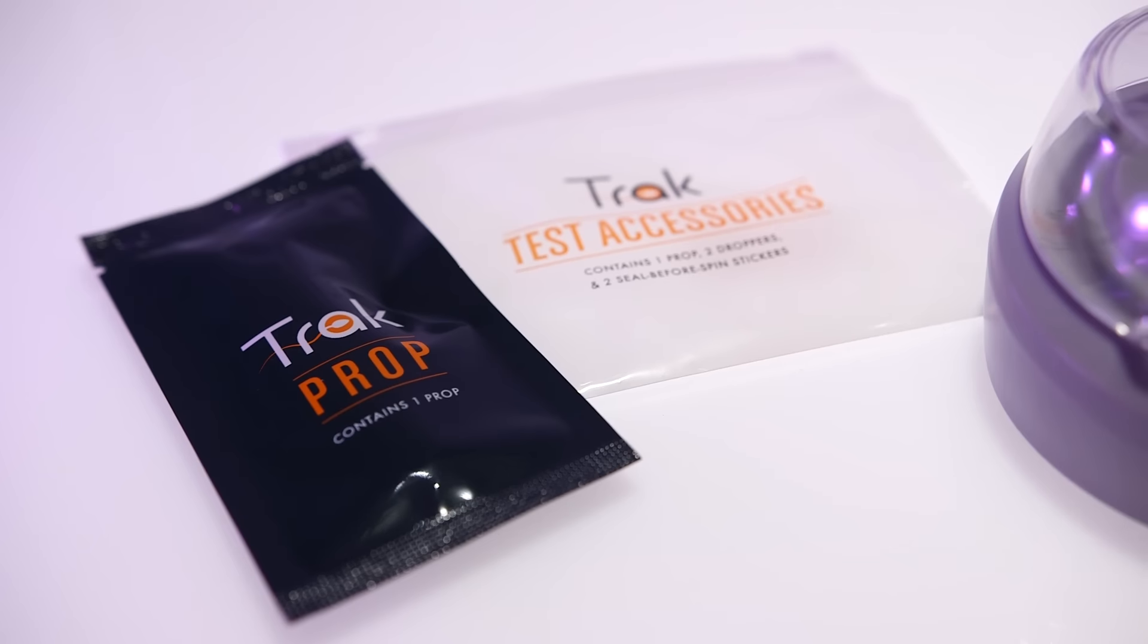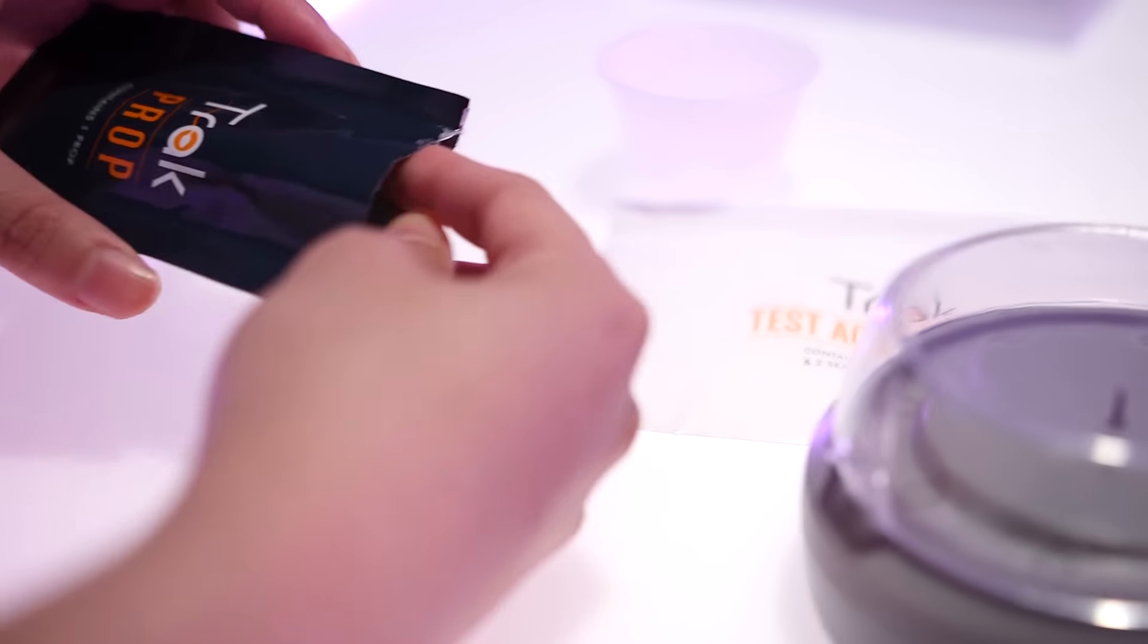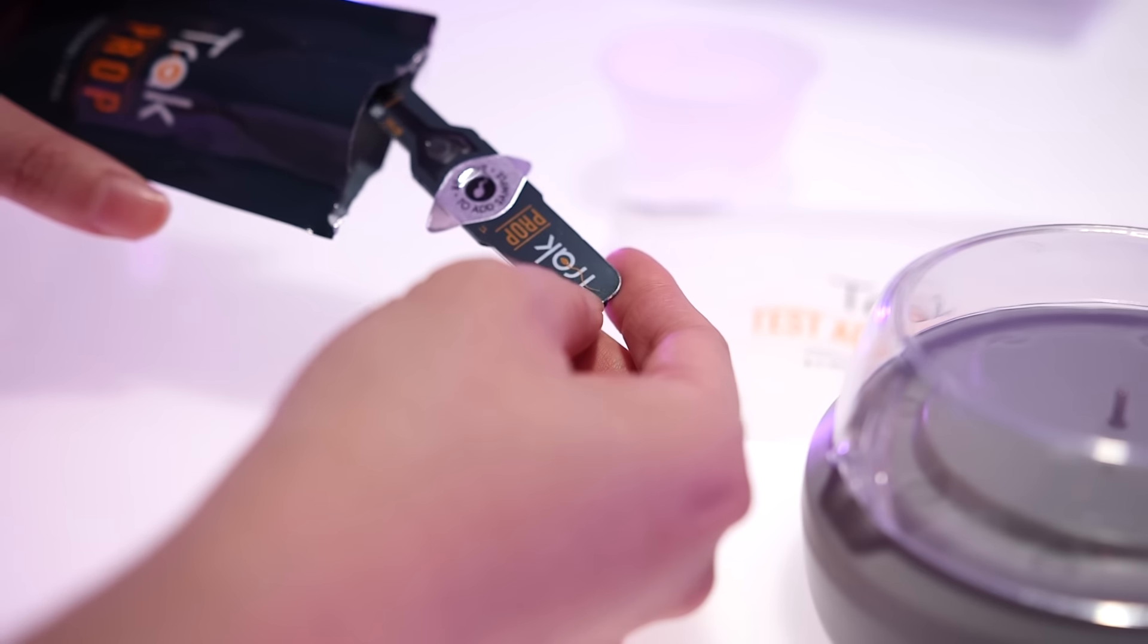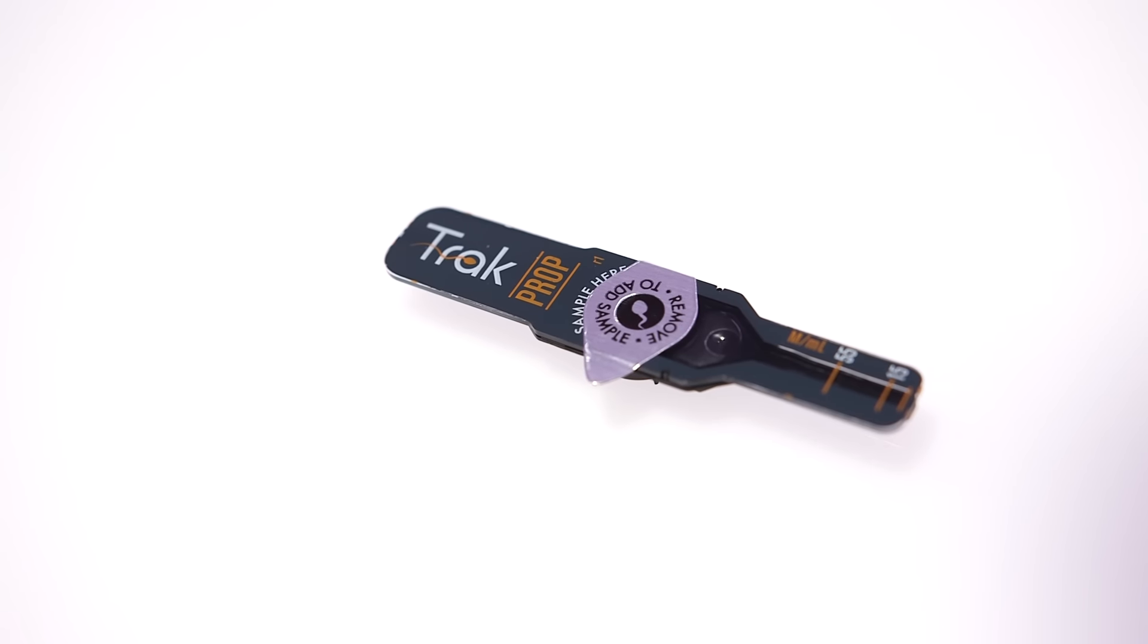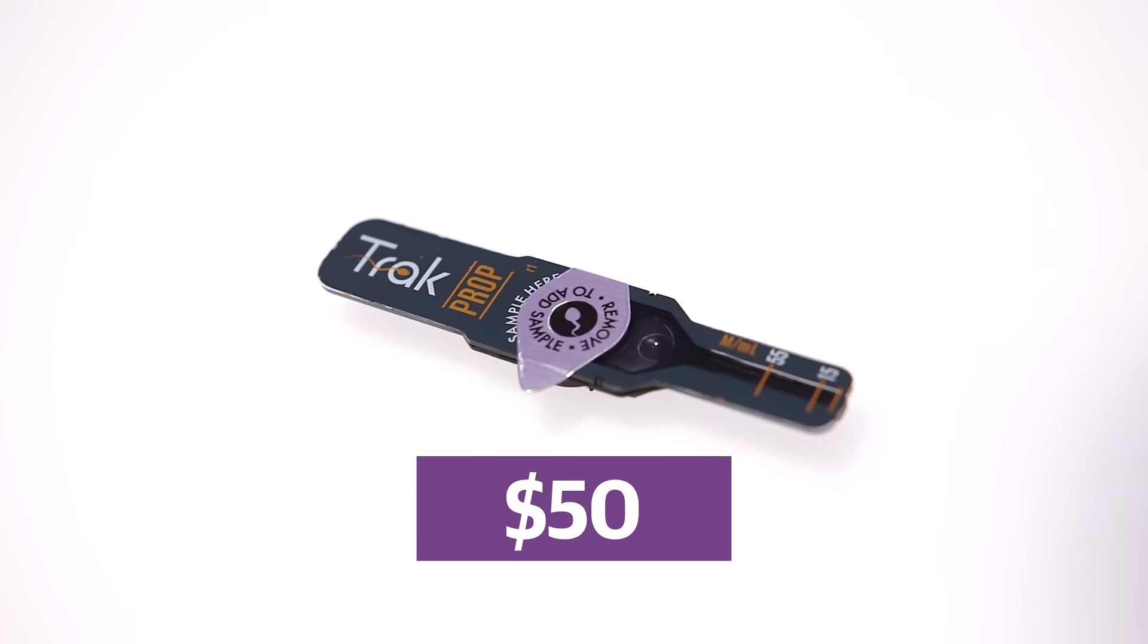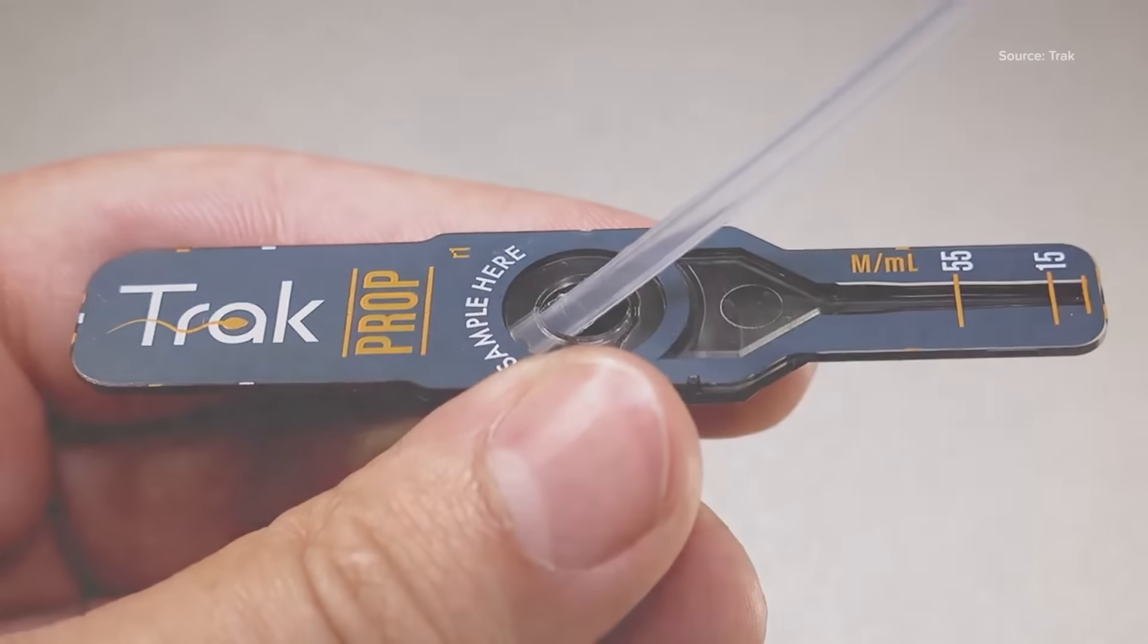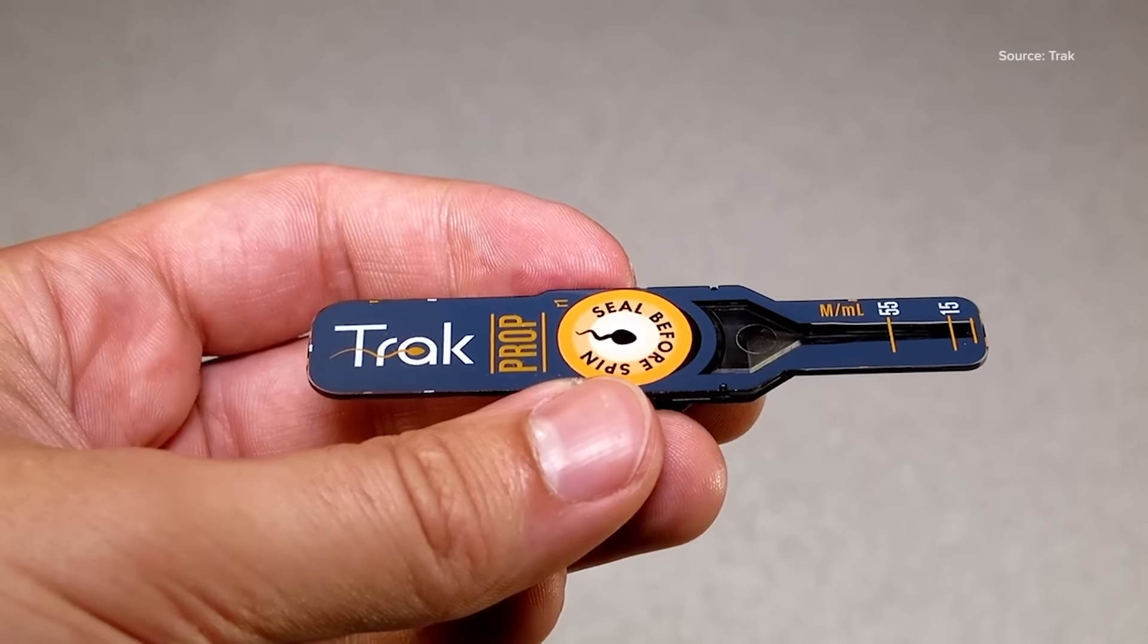Then, put one of the sticks that TRACK calls props onto the main module. Each $200 kit comes with four sterilized props, and you can buy more at $50 per pair. Using the included dropper, place a drop of your sample in the middle of the prop and close the module's lid.